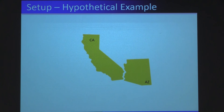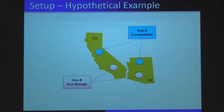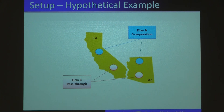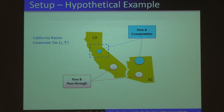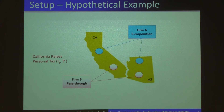To illustrate our empirical setup, consider the state of California and the state of Arizona. Assume we have two companies from our sample: the first is a C-Corp, and the second is a pass-through entity; otherwise they are very comparable. Both companies have one establishment in California and one establishment in Arizona. We then look at what happens if California increases its corporate income tax. We would expect some impact on the C-Corporation but not on the pass-through entity. Our results imply that the C-Corporation would reduce operations in California while simultaneously expanding operations in Arizona, whereas we observe no action for the pass-through entity, which serves as the control.